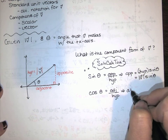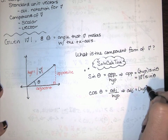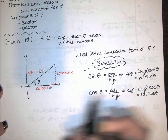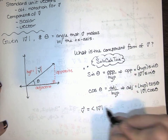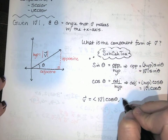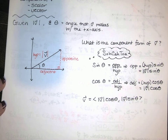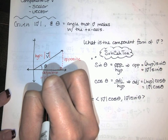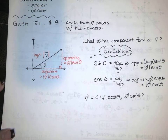And the adjacent side — if I know the hypotenuse and I know theta — that's going to be the hypotenuse times cosine of theta. The adjacent side is the x component, so v's x component is the magnitude of v times cosine of theta. And v's y component is the magnitude of v times sine of theta. Just using some right triangle trig. So that's one way of doing it.